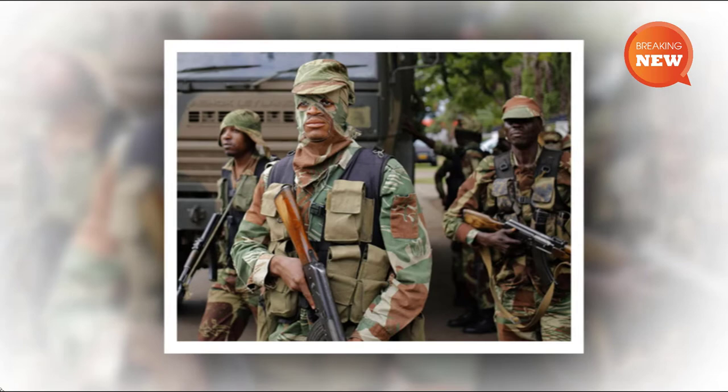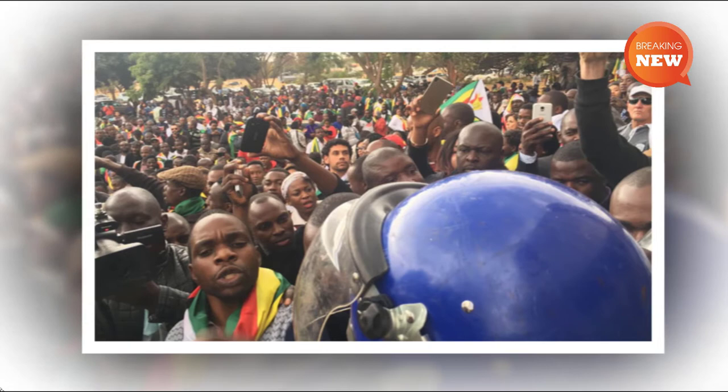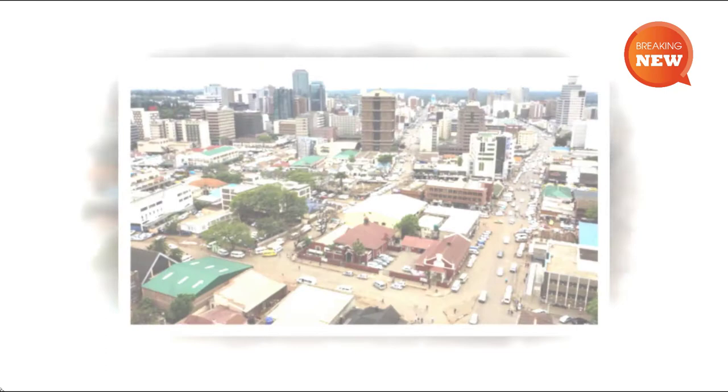The opposing faction was led by Welshman Ncube, who was the general secretary of the party. In mid-2004, vigilantes loyal to Tsvangirai began attacking members mostly loyal to Ncube, climaxing in a September raid on the party's Harare headquarters in which the security director was nearly thrown to his death. In May 2005, the government began Operation Murambatsvina.